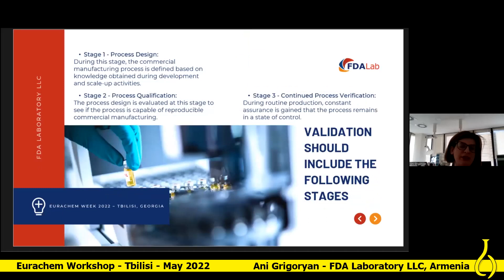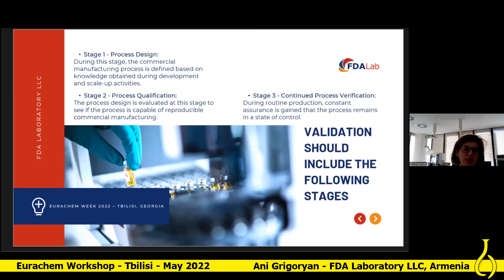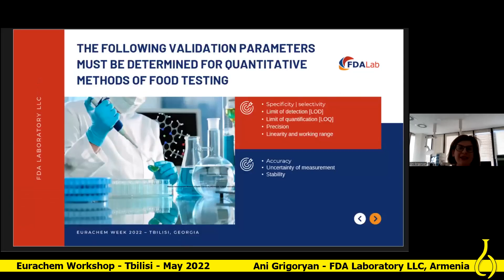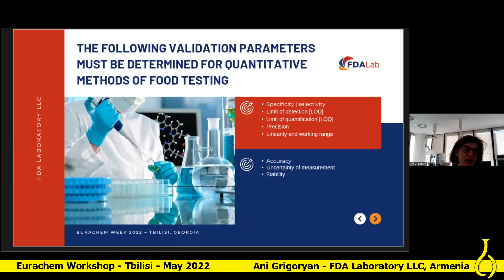Validation should include three stages. The first stage is process design, during which the commercial manufacturing process is defined based on knowledge obtained during development and scale-up activities. Stage two is process qualification, where the process design is evaluated to see if the process is capable of reproducible commercial manufacturing. Finally, in stage three, during routine production, constant assurance is gained that the process remains in a state of control. A successful validation program depends upon information and knowledge from product and process development, which establishes the approach to control the manufacturing process that results in products with the desired quality attributes.